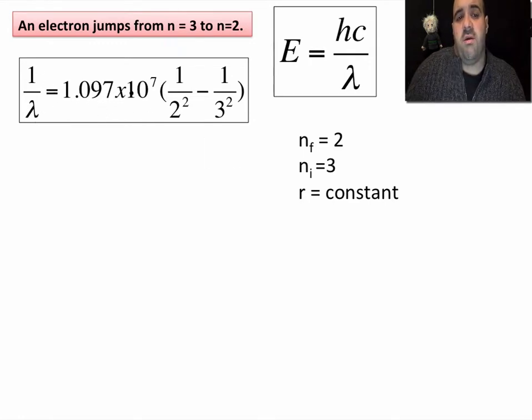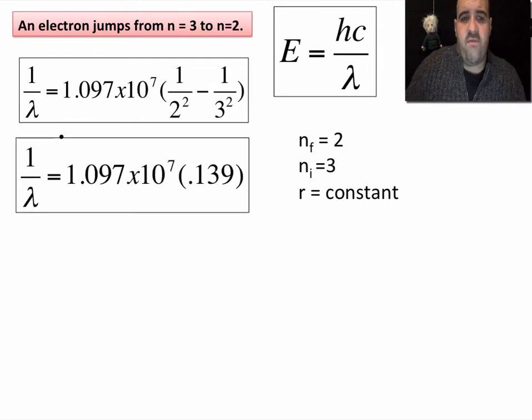What we did here is we plugged in all our values. One over lambda equals r, the constant value, and I left the unit out, it's over meter. One over two, one over three. And all you got to do is solve for lambda now. This is like an x. Solve for x.